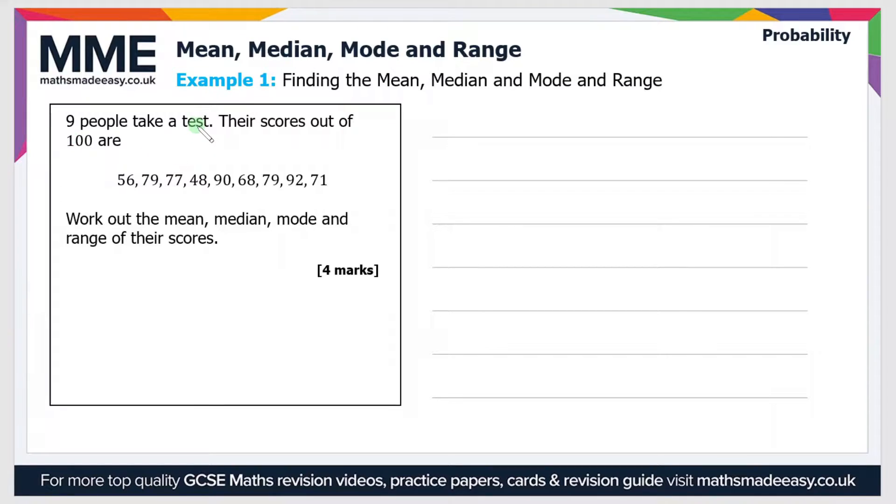So the first one: 9 people take a test, their scores out of 100 are 56, 79, 77, 48, 90, 68, 79, 92 and 71. Work out the mean, the median, the mode and the range of their scores.